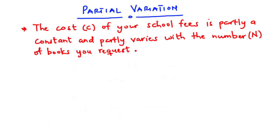In the previous videos we looked at direct and inverse variation, we also looked at joint variation, and now it is time for us to discuss partial variation. Partial variation is a type of variation where a quantity is partly a constant and partly varies with another quantity.